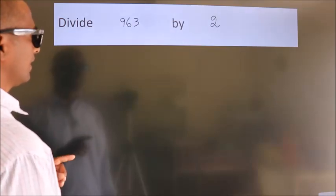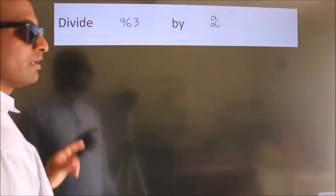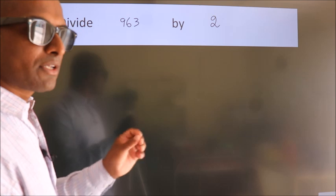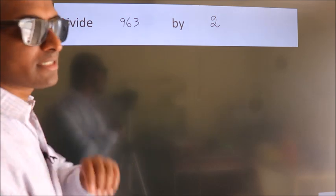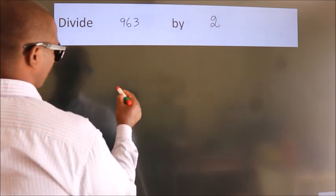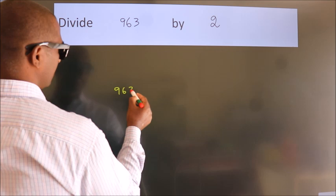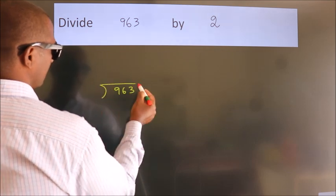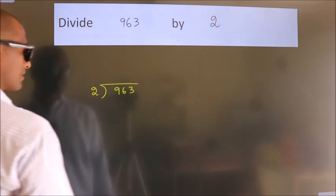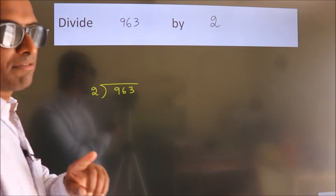Divide 963 by 2. To do this division, we should frame it in this way: 963 here, 2 here. This is your step 1.